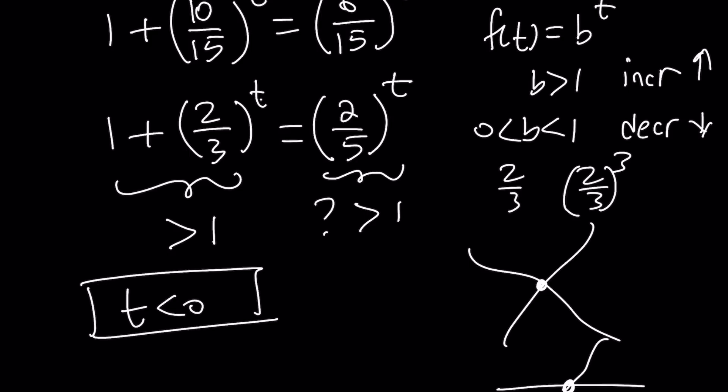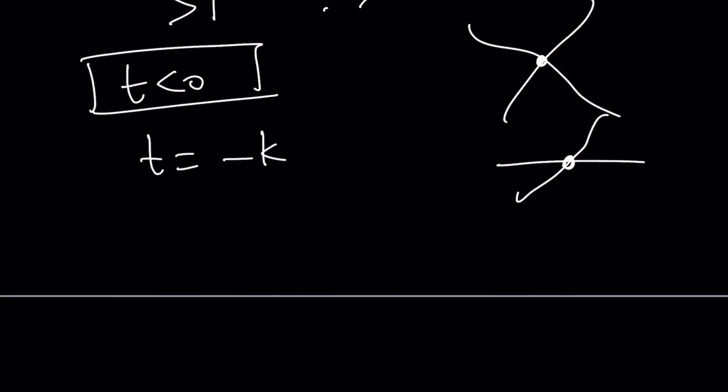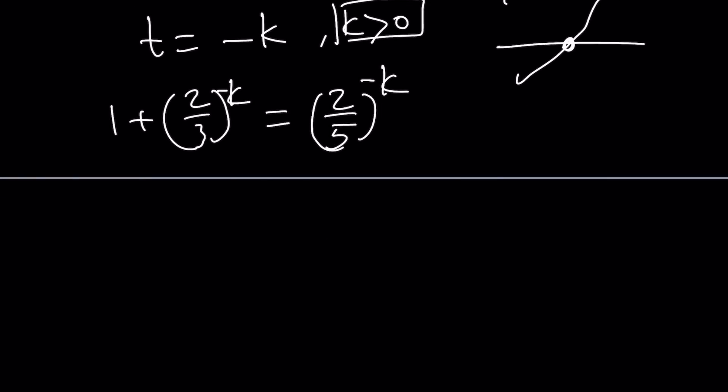So which value? One of the things you can do is replace t with negative k. 1 plus 2 thirds to the power k equals 2 fifths to the power k. That will be negative k, of course. But negative k, and in this case, since t is negative, k would be positive because it's the opposite. And then, since we have the negative powers, let's go ahead and flip them. 1 plus 3 halves to the k equals 5 halves to the k.